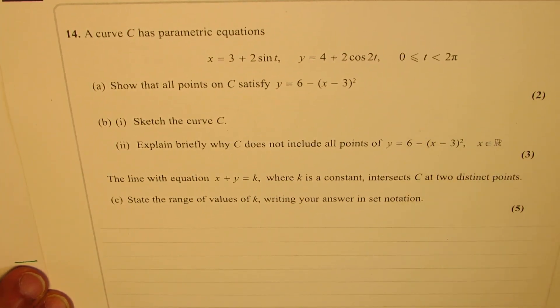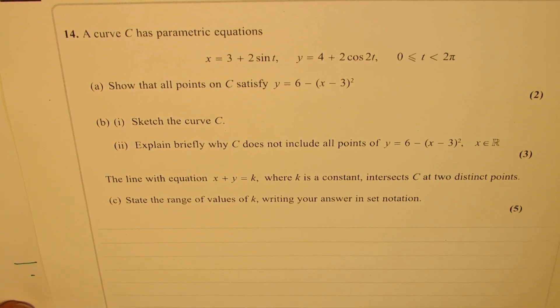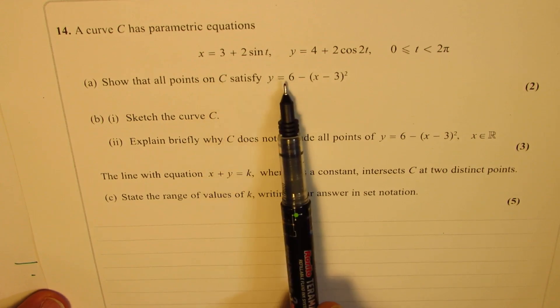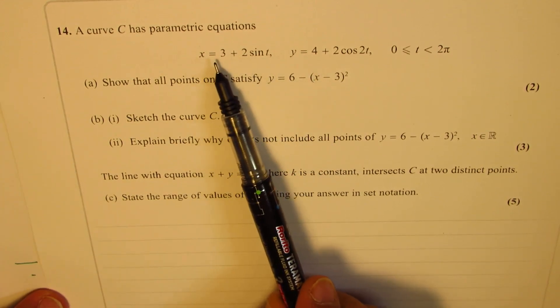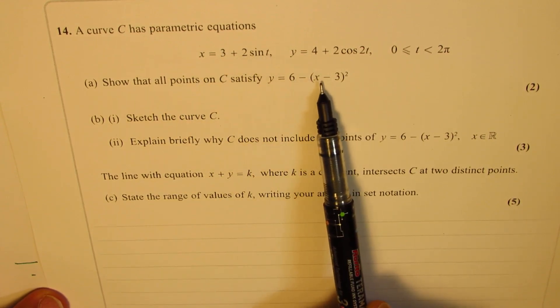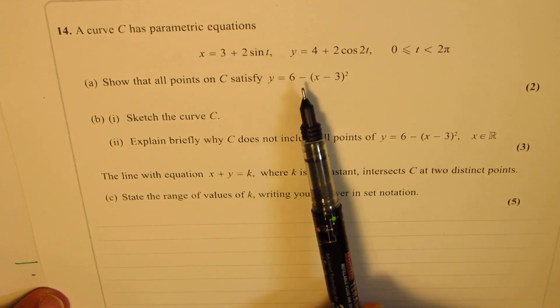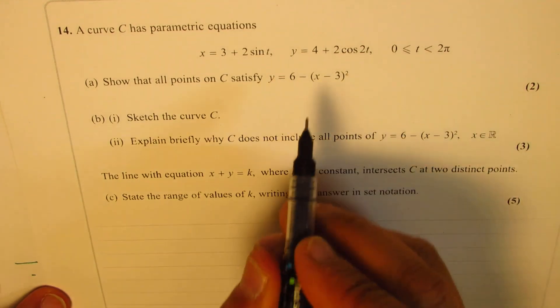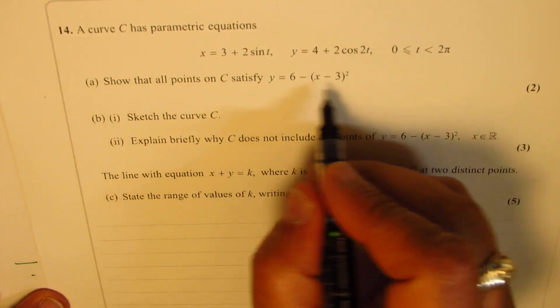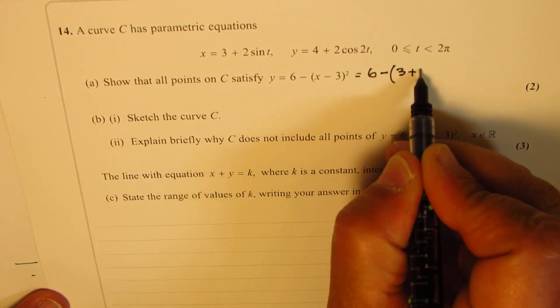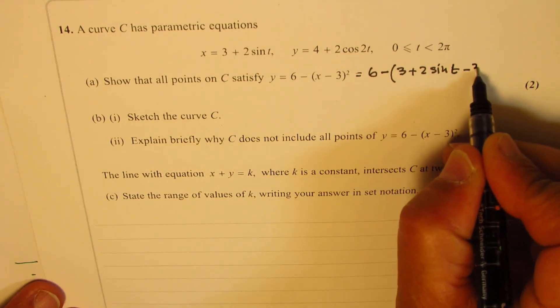Now, what we are going to do is try to use the space efficiently and do it in the shortest possible way. To show that all points on C satisfy the given condition, we are given x as 3 plus 2 sin t. If I substitute this for x and see what we get for y, and if we get that equation, then those points satisfy the given condition. So we substitute x as 3 plus 2 sin t into 6 minus (x minus 3) squared, writing 6 minus (3 plus 2 sin t minus 3) squared.